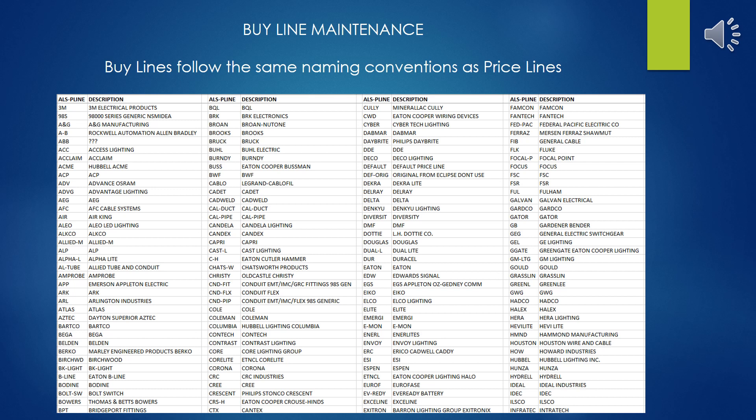Here's an example listing of the buy lines and price lines that we use in our system. As mentioned before in the presentation on price line maintenance, these are mostly derived from the trade service catalog, or the IDW in the manufacturer field or brand field. For vendors that do not publish the catalogs, we make our best guess on what it should be, and try to make it unique and consistent with the others.